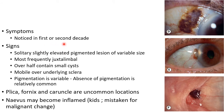The symptoms of conjunctival nevus are usually first noticed in the first or second decade of life. The signs include a solitary, slightly elevated pigmented lesion of variable size, most frequently located in the juxtalimbal area.